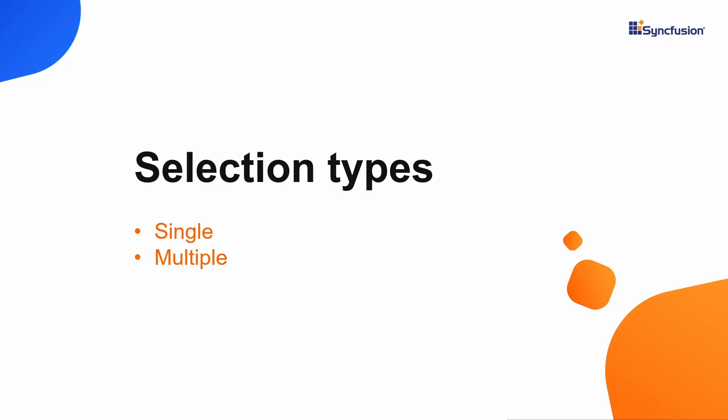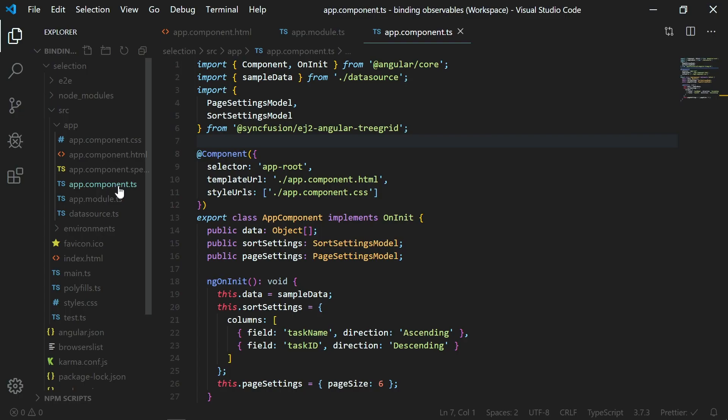First, let me show you the two selection types. One is single selection, which is the default selection type, and the other is multiple selection. I will show you how to configure selection types in the sample.